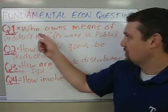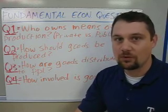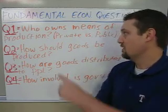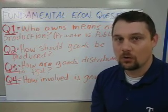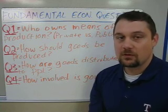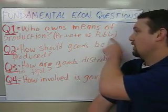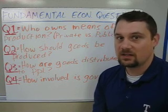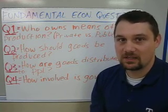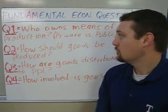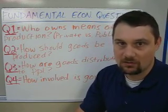First we have question one, which is: who owns the means of production, or the M.O.P.? I have two terms you need to write down. First is private ownership, which means that individual citizens or groups of citizens own the factory or own the business. Then we also have public ownership — anytime something is referred to as public ownership, that means the government owns it. For example, the school that I work at is a public school, meaning it is controlled and owned by the government. So that's the first question: who owns the means of production, the factories, the resources used to make all the stuff we use?